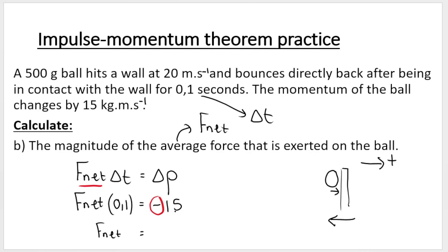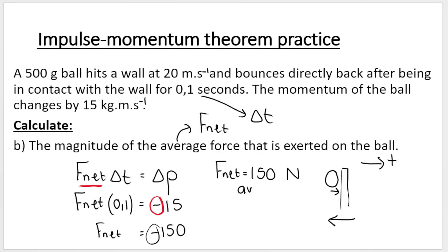To get F net by itself: negative 15 divided by 0.1 gives me negative 150. Because F net, change in momentum, and impulse are all vectors, the negative just tells me direction. So your final answer needs to be rewritten as a positive: 150 Newtons, and the negative means away from the wall.